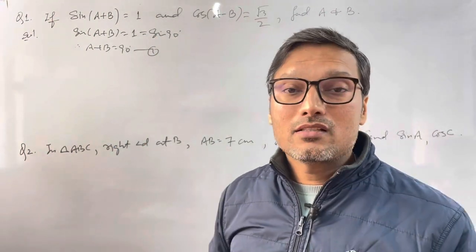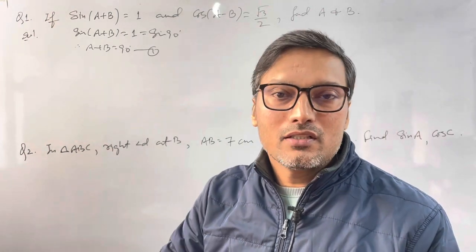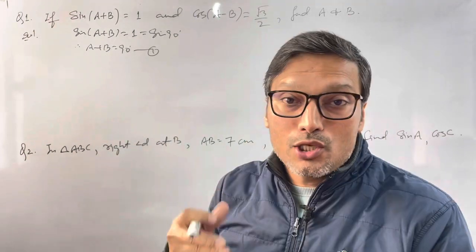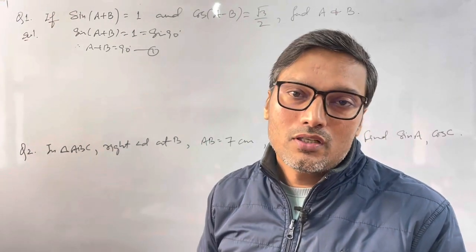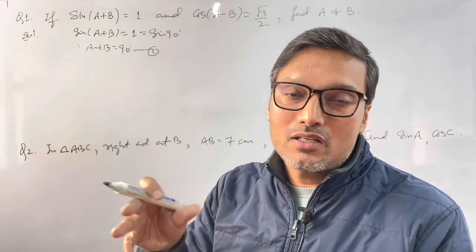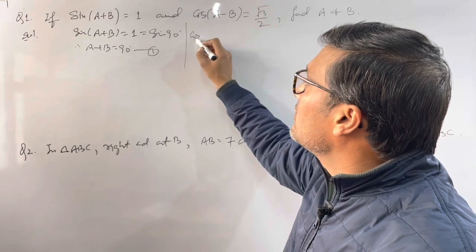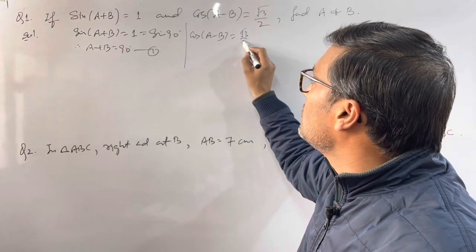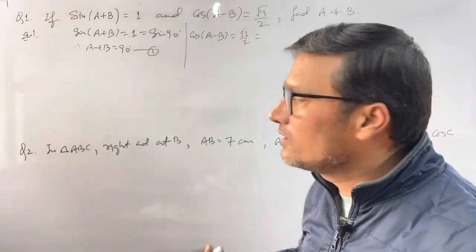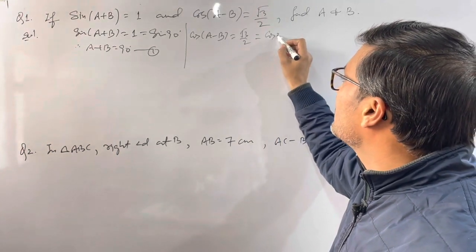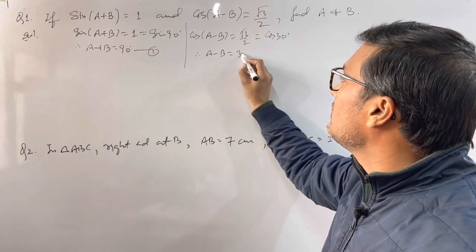If you practice this, the linear equations chapter is also revised. The elimination method and substitution method are covered. If you have two equations, how do you solve them? Now the second equation: cos(A-B) is equal to √3/2. From the trig table, cos 30° equals √3/2. So comparing angles, A-B = 30°.